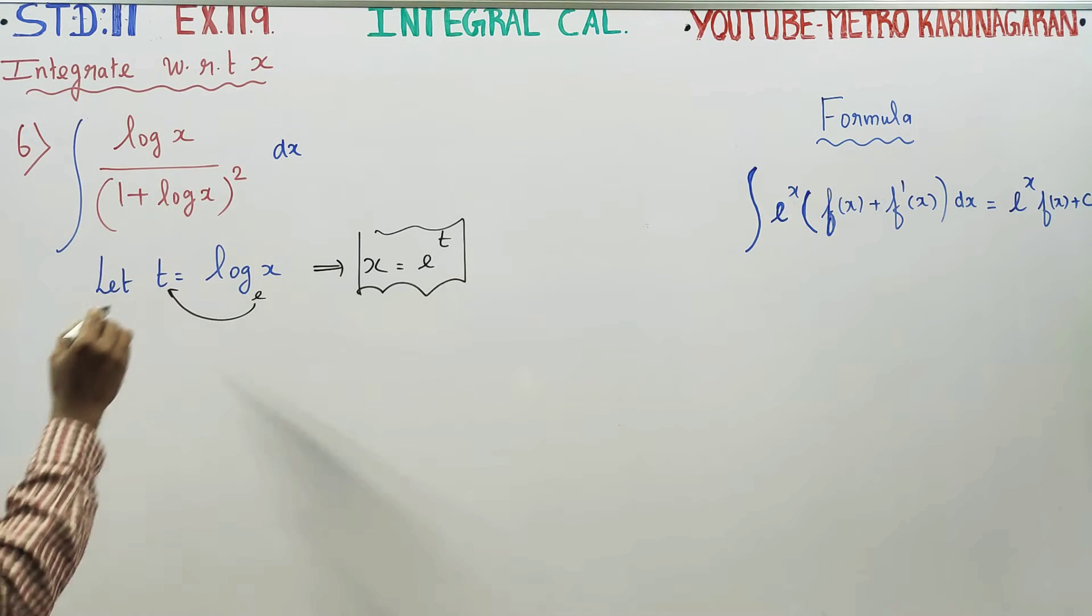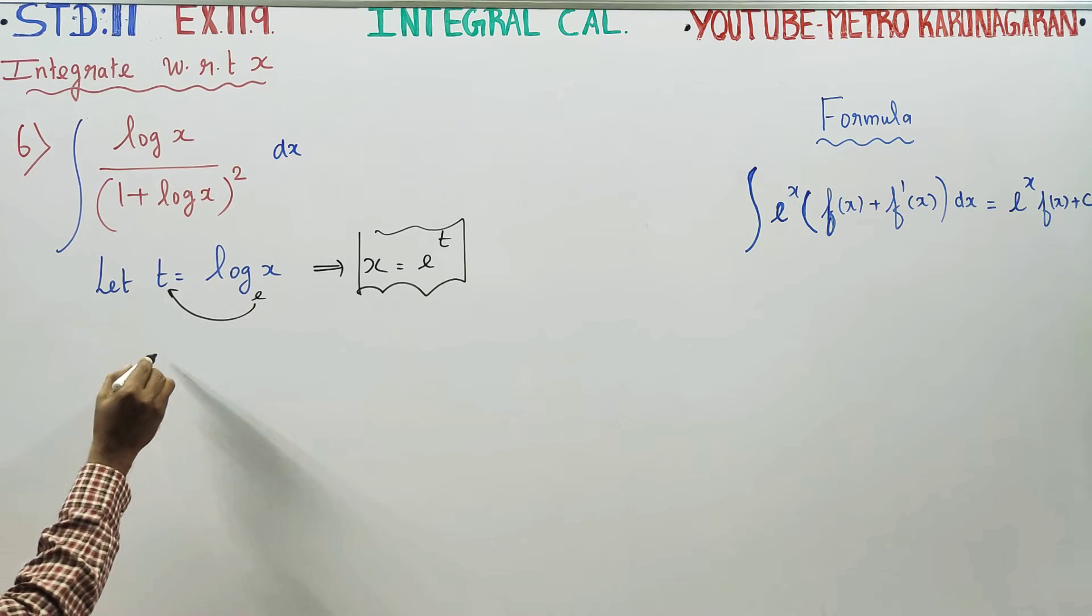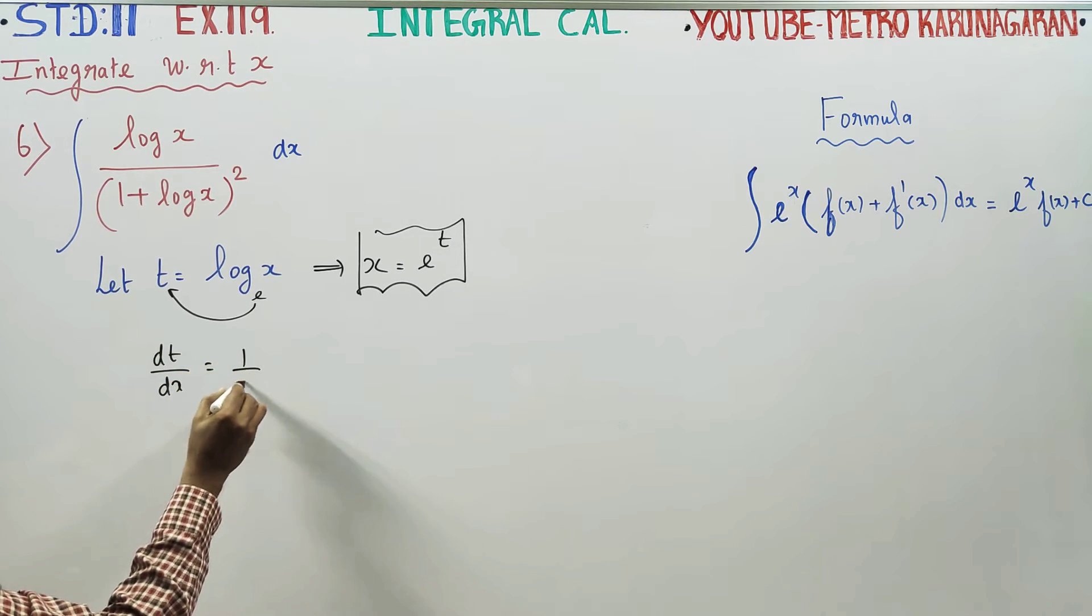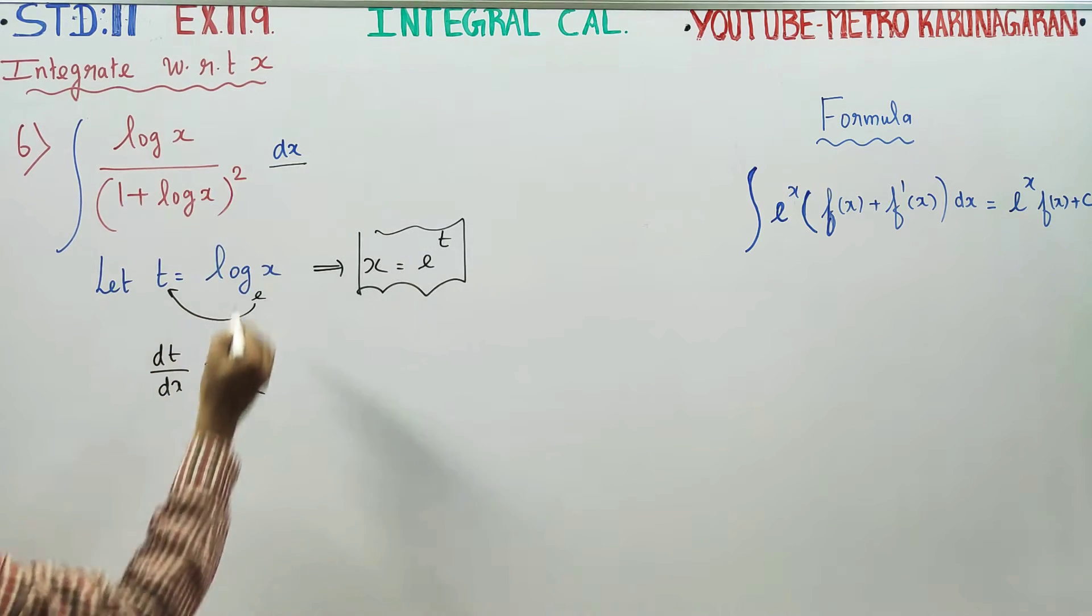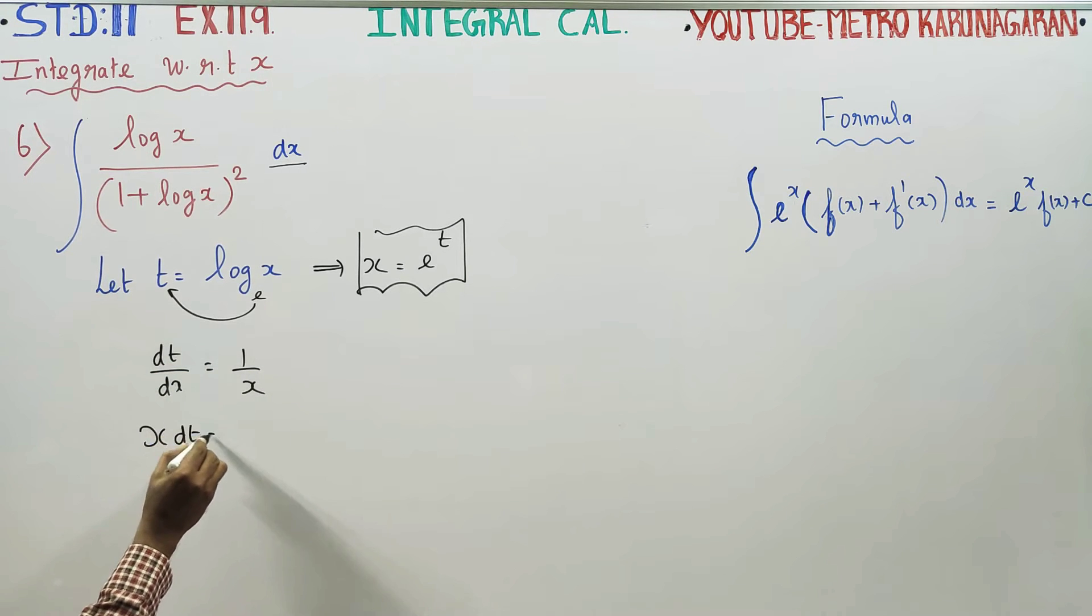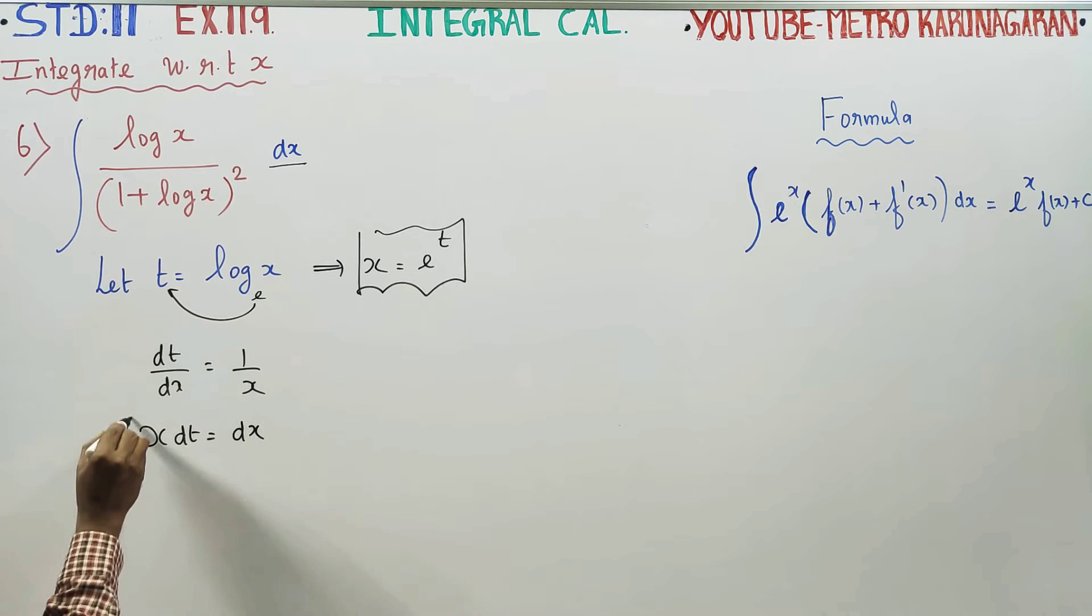If you differentiate it, dt by dx equals 1 by x, because log x differentiate is 1 by x. Actually I want only dx. If you cross multiply, x dt equals dx. Right?